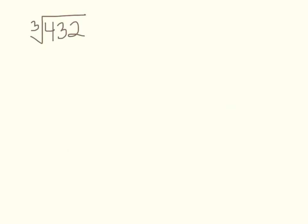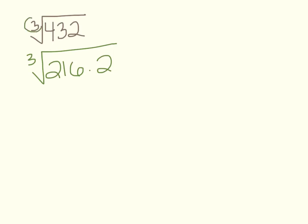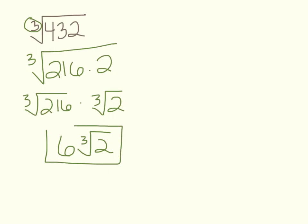Cube root of 432: 432 is not a perfect cube, so think about what perfect cube goes into 432. That's 216, so this equals the cube root of 216 times 2. The cube root of 216 is 6, giving 6 times the cube root of 2. You need to have your cubes memorized for this.